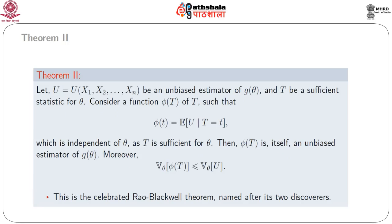Now we consider Theorem 2. Let u = u(x₁, x₂, …, xₙ) be an unbiased estimator of a parametric function g(θ), and let T be a sufficient statistic for θ. Consider φ(t) = E(u | T = t). Since T is sufficient for θ, φ(t) is independent of θ, and φ(T) is itself an unbiased estimator of g(θ). Moreover, Var(φ(T)) ≤ Var(u) for all θ. This is known as the Rao-Blackwell theorem.